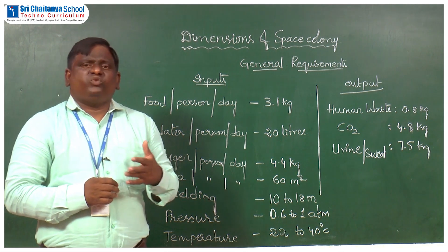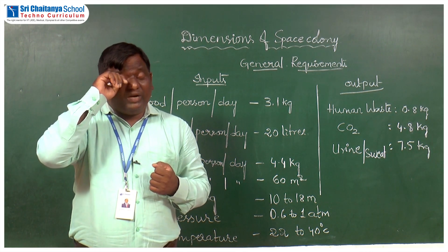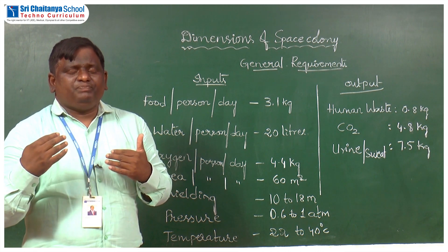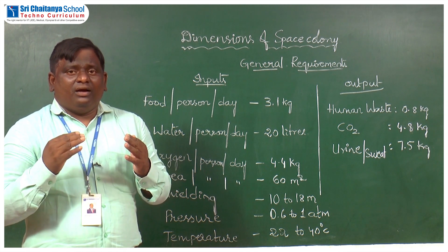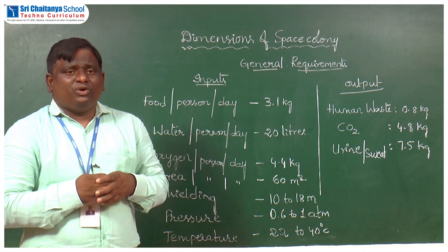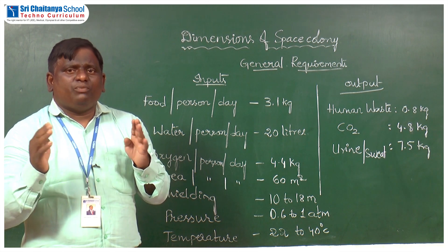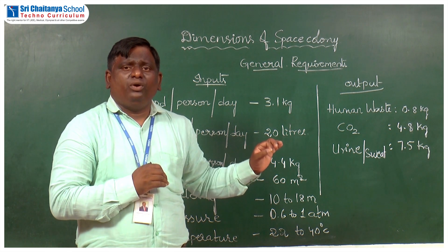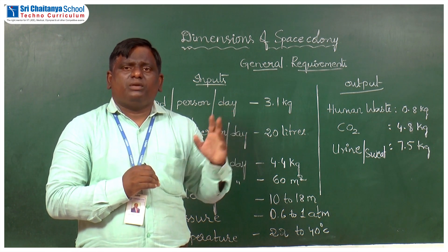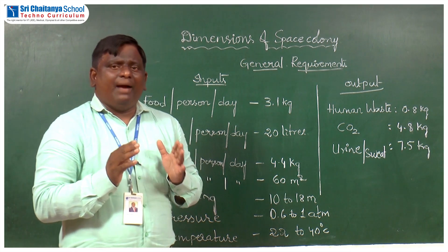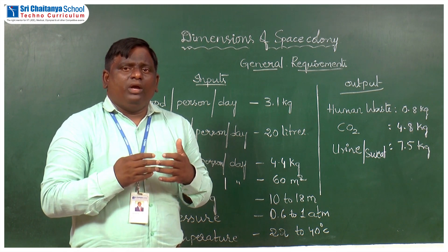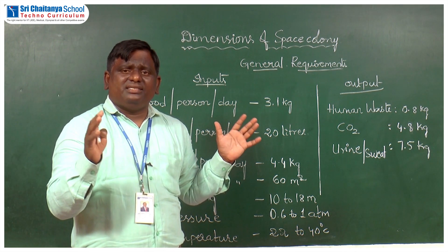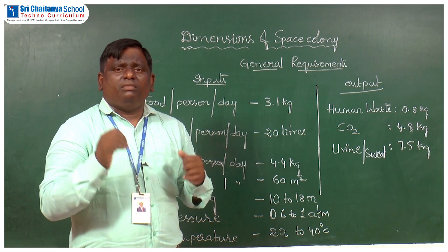Apart from shielding, pressure is also important. Pressure is force acting per unit area in a unidirectional way, and it is very important for human beings because the outer atmospheric pressure determines inner blood pressure. The outside atmospheric pressure inside the space colony should be between 0.5 atmosphere to 1 atmosphere. The normal temperature range in which humans can safely live is 20 to 40 degrees Celsius — for our reference, 22 to 40 degrees Celsius as an average limit.